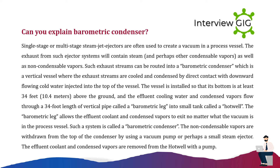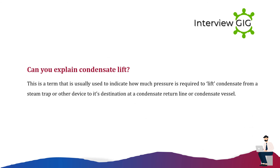Can you explain a barometric condenser? Single-stage or multi-stage steam jet ejectors are often used to create a vacuum in a process vessel. The exhaust contains steam, condensable vapors, and non-condensable vapors, and can be routed into a barometric condenser — a vertical vessel where exhaust streams are cooled and condensed by direct contact with downward-flowing cold water injected at the top. The vessel bottom is at least 34 feet (10.4 meters) above the ground, and effluent cooling water and condensed vapors flow through a 34-foot barometric leg into a small tank called a hot well. Non-condensable vapors are withdrawn from the top using a vacuum pump or small steam ejector, and effluent condensate is removed from the hot well with a pump.